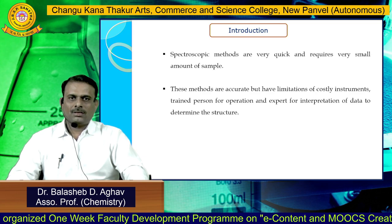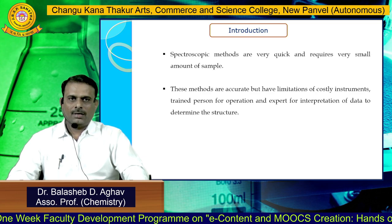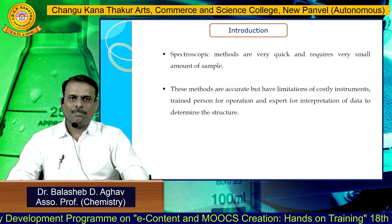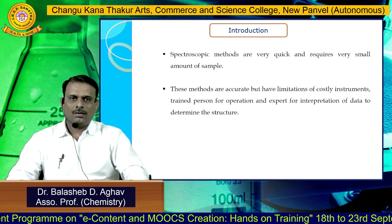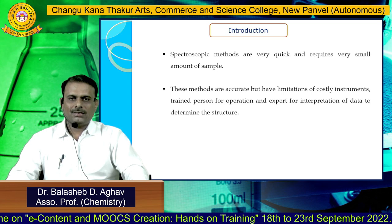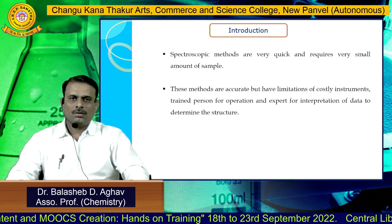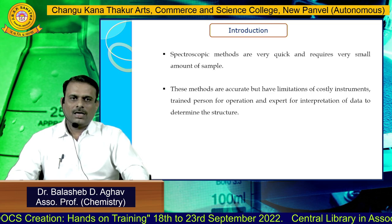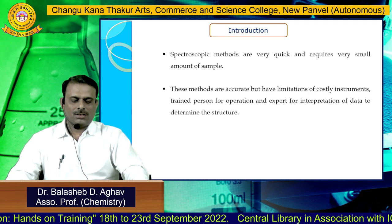Spectroscopic methods are very quick and accurate, and require only a very small amount of sample. However, these methods have limitations like costly instrumentation, the need for a trained person for operation, and an expert for interpretation of the data to determine the structure of the compound.